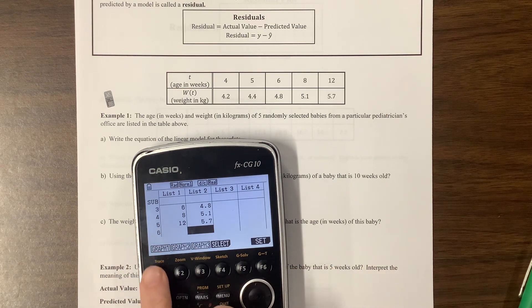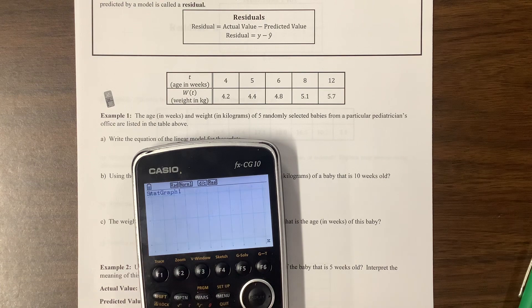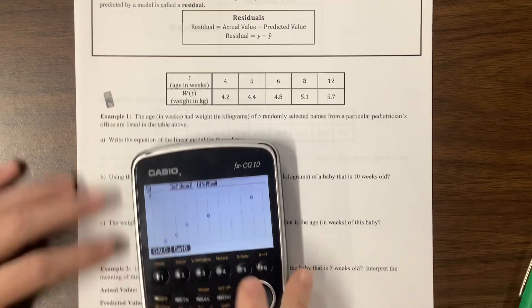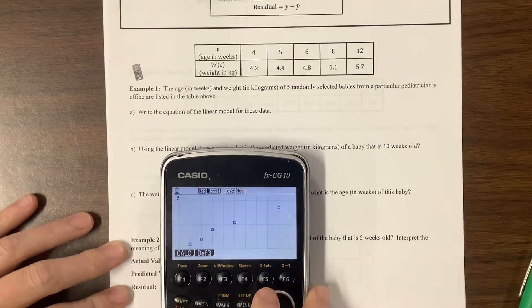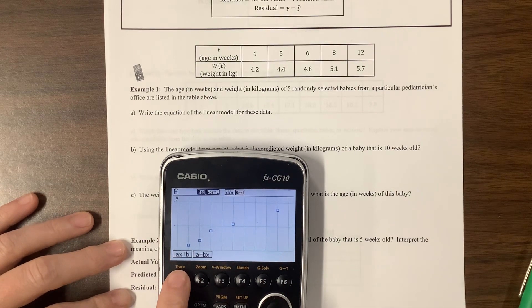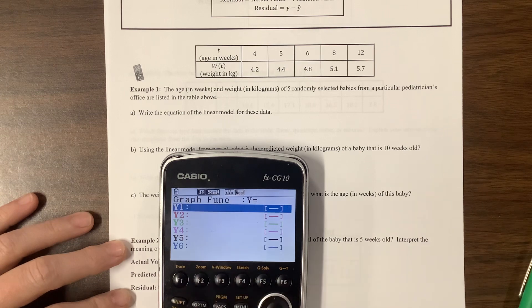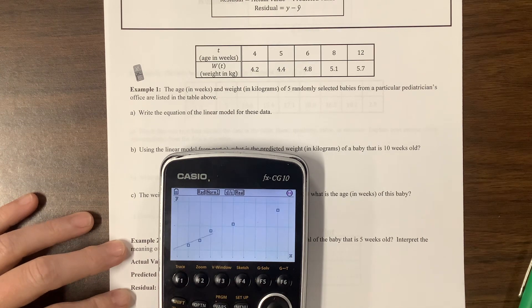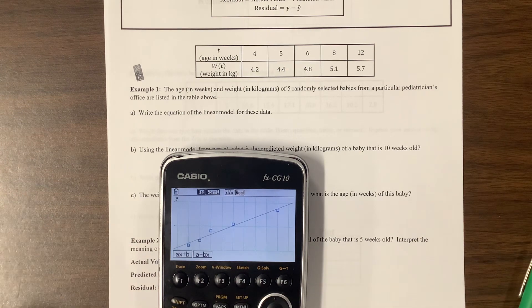Okay, so we can graph this. And here are those points and we want to, they tell us to write an equation of the linear model. So we're going to calculate the linear regression, ax plus b. I may just copy this into y1 in case I need it. We're going to draw it. So there are those points.